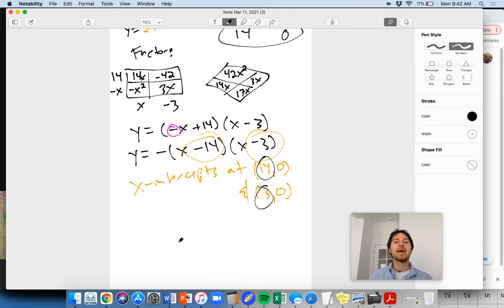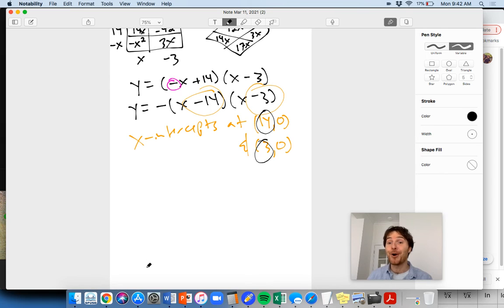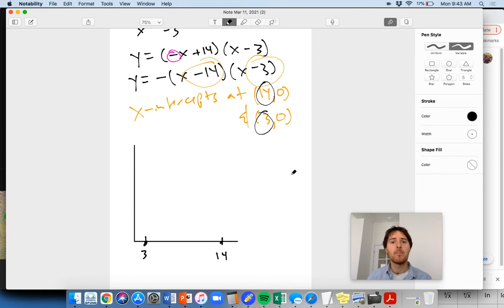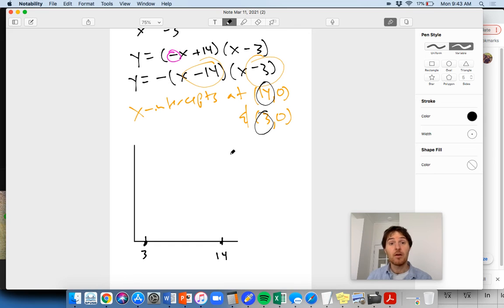Tiffany said, you know what, I can factor this and boom, there you have it. We're going to have x-intercepts at 14, zero and three, zero. So what does that mean for the parabola? Let's maybe get the parabola up here. If I kept filling this in, I would have gotten there anyways.